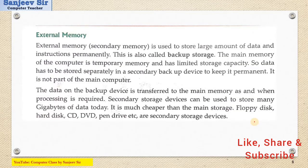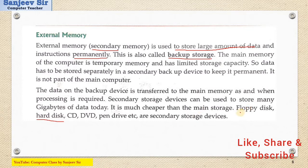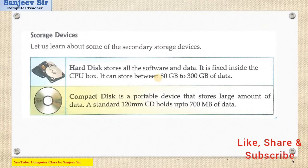Now we move to the next topic: external memory. External memory, also called secondary memory, is used to store a large amount of data permanently. As a backup storage, we can use it. We use hard disk in a computer. Nowadays we are not using floppy disk, but CD, DVD, and pen drive are used. These are all secondary storage devices. When data is stored in them, it remains there — even after two or three days, or anytime in the future, you can get that data again.